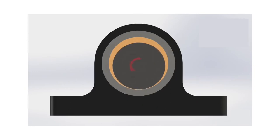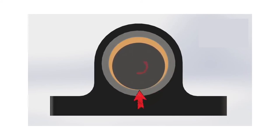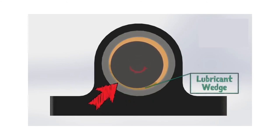If we start to spin the shaft, you can see that the oil clings to the side of it and gets dragged around, and at this point the pressure is going to build up and up and up. Eventually we create a wedge of oil — a wedge of lubricant — that's going to lift the shaft and almost centralize it in that bearing. This is referred to as hydrodynamic lubrication.